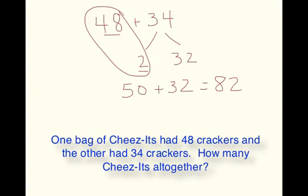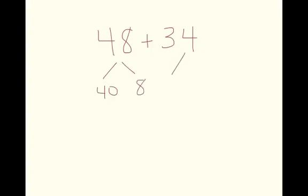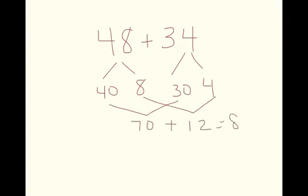Now another way we could look at 48 plus 34, and I'm going to go ahead and get a clean slate here, is we can always break apart by place value. Keep in mind that decomposing by place value can be a very powerful strategy. So we could look at it as 40 plus 8, and 34 as 30 plus 4. And then here we have 70, 40 plus 30 is 70, plus 12 equals 82.